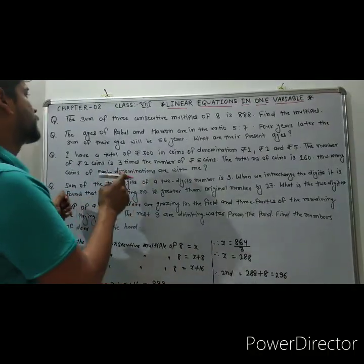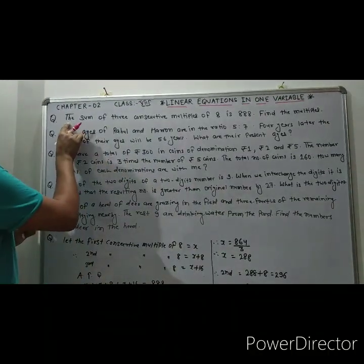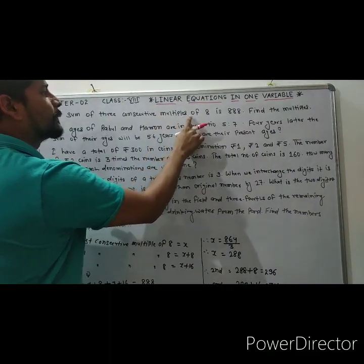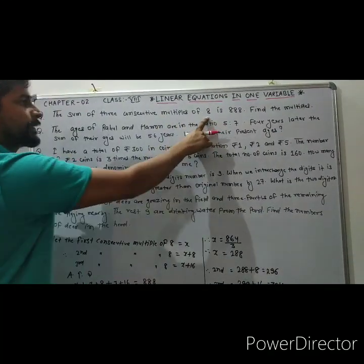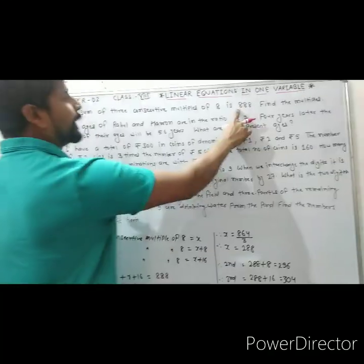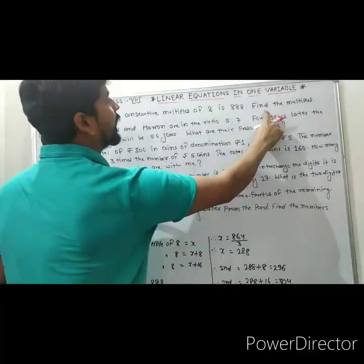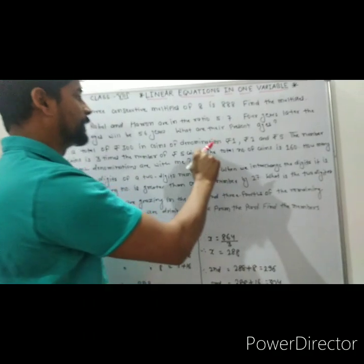Question number 1: The sum of 3 consecutive multiples of 8 is 888. Find the multiples.